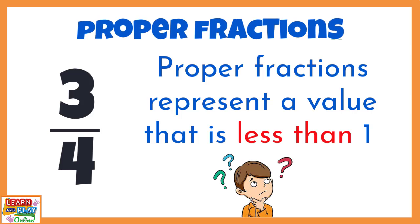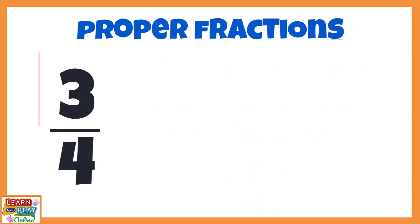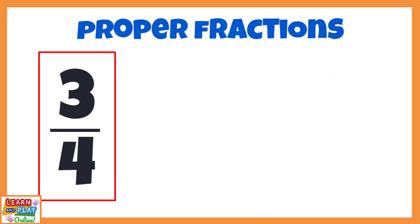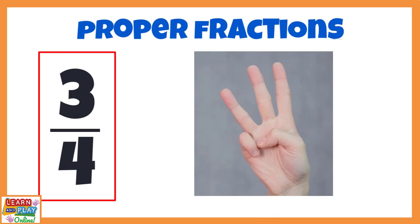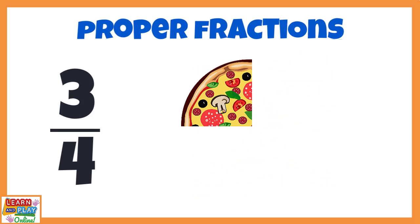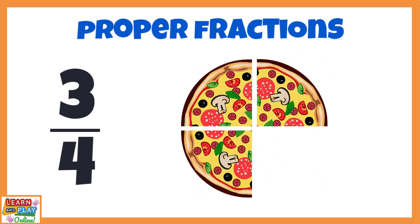What does that mean exactly? Let's use visuals to help us better understand this concept. If you ate 3 quarters of a pizza, that means you ate 3 slices out of 4 in total. And as you can see from the picture, that means you did not eat one whole pizza, which shows that the proper fraction 3 quarters is a value that is less than 1.